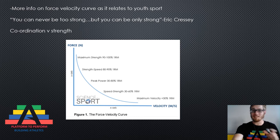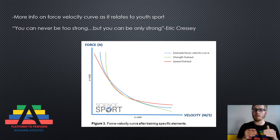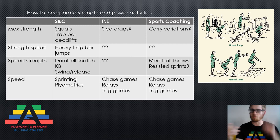For youth athletes — get them strong, good things will happen — but make sure you're still working on other qualities at the same time. If all you did was strength train, you bias the force-velocity curve towards high force activities. If all you do is sprint, you bias it towards velocity activities. We want to shift that curve up and to the right, so we're working across the whole curve using heavy lifts, fast exercises, and everything in between. So how do we incorporate strength and power activities into strength and conditioning, PE, or sports coaching?